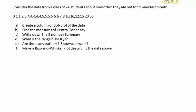We're going to go through and do each of these six pieces and talk about the different statistics that go along with this data. The first thing it asks us to do is create a column or dot plot of the data. We'll go ahead and just build it. I have several different values here from 0 to 30, so I'm going to create a little chart.